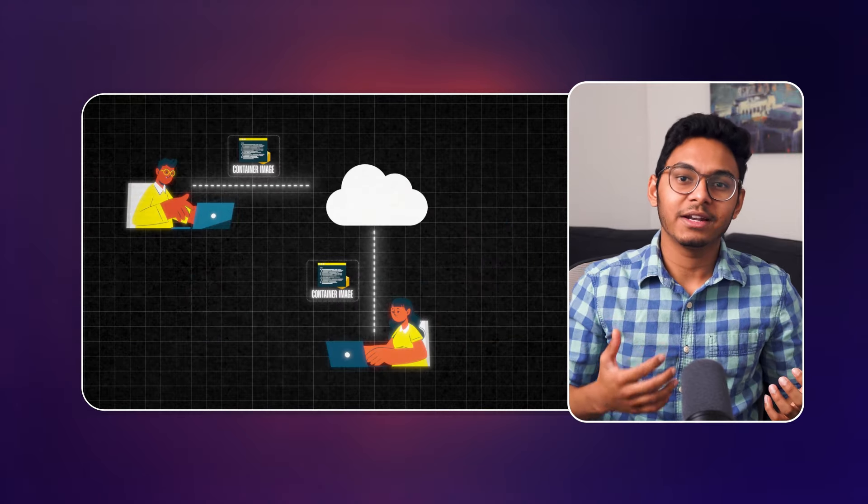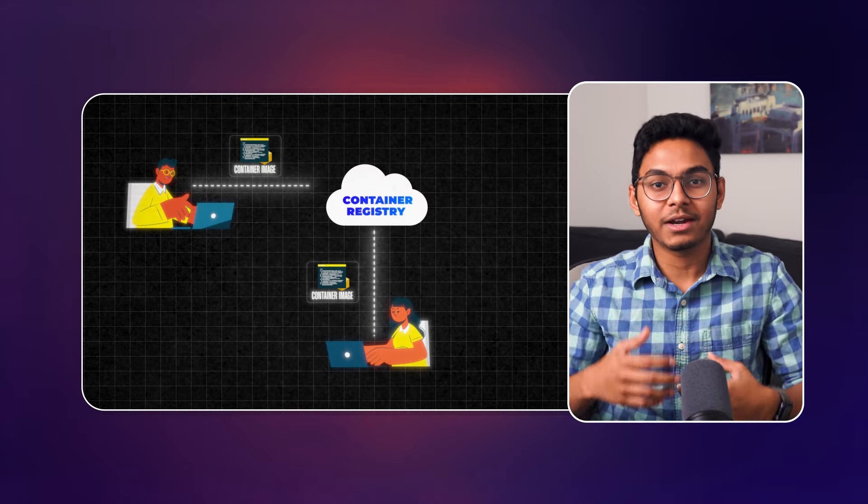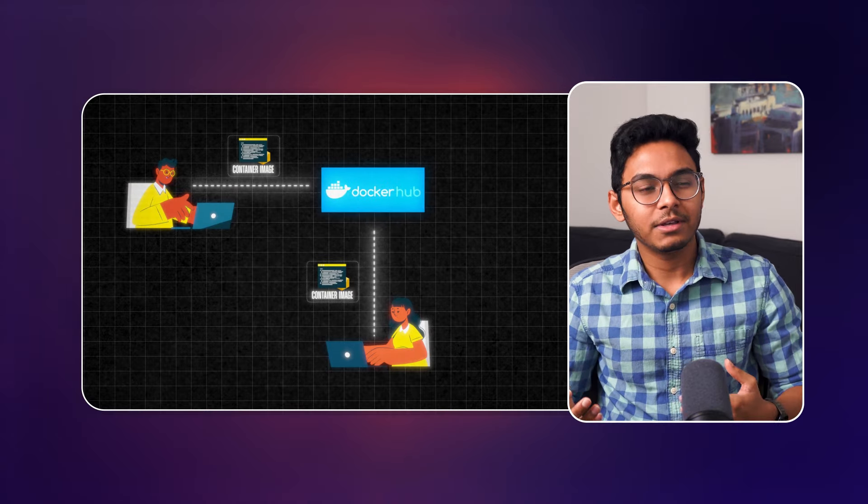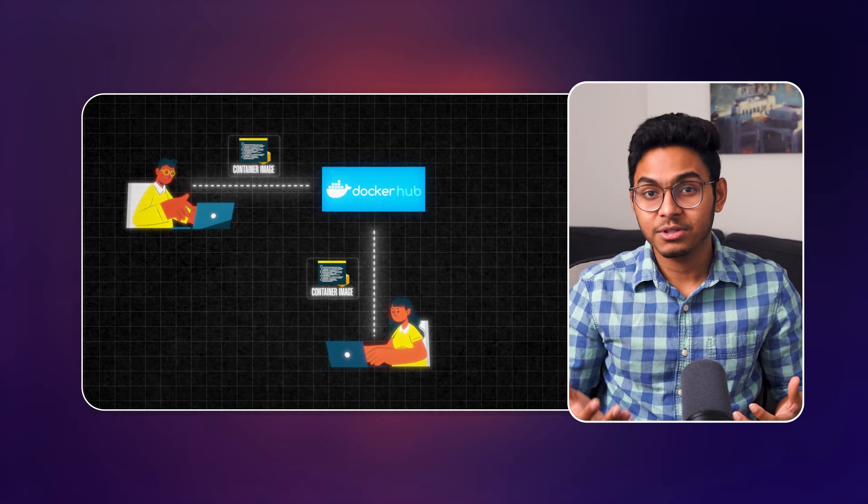Now that we have containerized our app, we can share the container image with our friends so that they can run containers of our application on their machines. To do that, we need to host our container images on the internet by pushing them to a container registry. Docker Hub is the most popular public container registry, which means the container images hosted there are publicly accessible. You can develop multiple applications, containerize them, and then host them on Docker Hub.